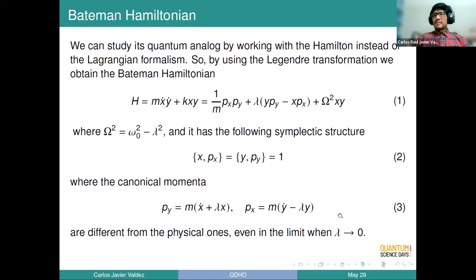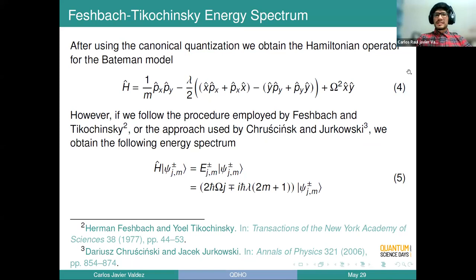If we continue with canonical quantization in the usual way, we arrive at this operator. And if we now try to solve the eigenvalue problem for this Hamiltonian operator, we arrive at the following. The interesting thing is that we had a time-independent Hamiltonian classically; however, in equation five we see that this Hamiltonian is not Hermitian because you are having complex values. This is problematic if you want to have a unitary evolution.